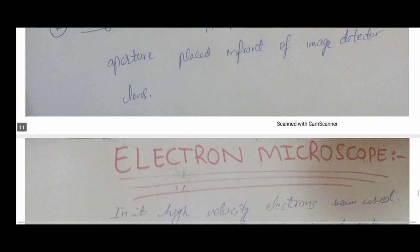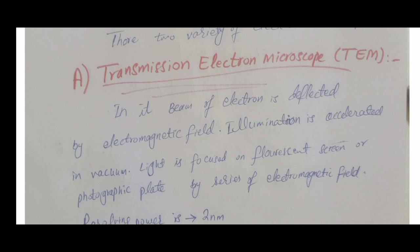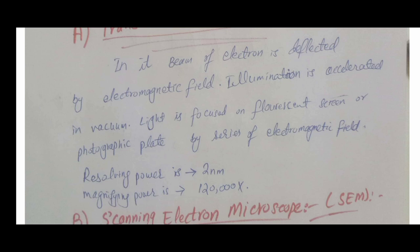Now we move to the electron microscope. In the electron microscope, we use electrons of high velocity, and their beam wavelength is about 1/2000 times that of light. There are two types: transmission electron microscope (TEM) and scanning electron microscope (SEM). In TEM, electrons pass through the object, whereas in SEM, electrons only scan the surface of the object. In TEM, the beam of electrons is deflected by an electromagnetic field, illumination is accelerated in a vacuum, and light is focused on a fluorescent screen or photographic plate by a series of electromagnetic fields. Its resolving power is 2 nanometers and its magnifying power is 120,000 times.